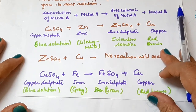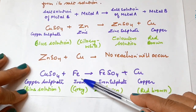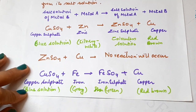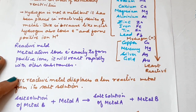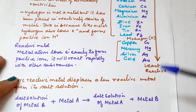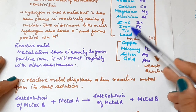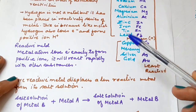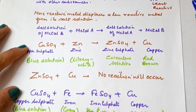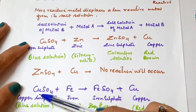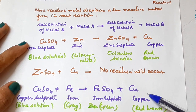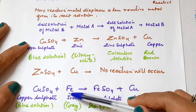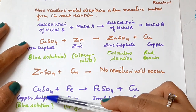Let's take one more example: copper sulfate plus iron. We check the reactivity series — iron is more reactive than copper. So iron will displace copper from the copper sulfate solution. Iron sulfate is formed and copper is released. Iron has replaced copper in this reaction.